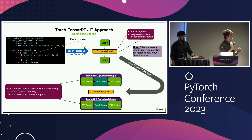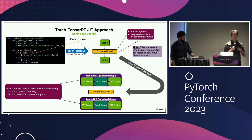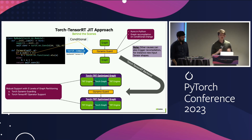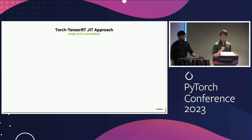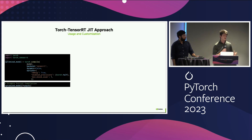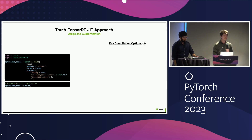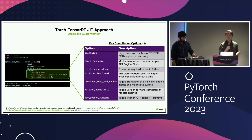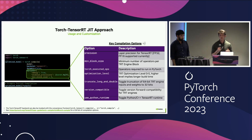This provides robust support with two levels of graph partitioning: at the Python level for complex Python code, and at the operator level for operators that can be further accelerated in TensorRT versus Torch. To use it, all the user needs to do is call Torch.compile on the model, specify the backend TensorRT, and optionally provide compiler options. Then pass in inputs and it will just-in-time compile. You can customize things like layer precision via the precision keyword argument, or specify the minimum number of operators for a TensorRT engine block.